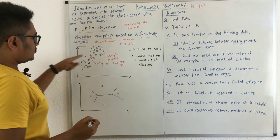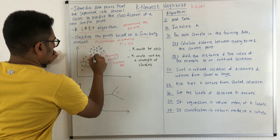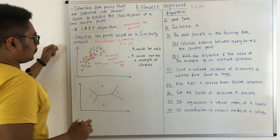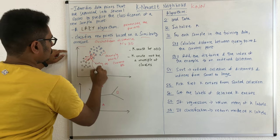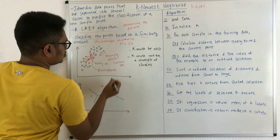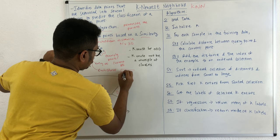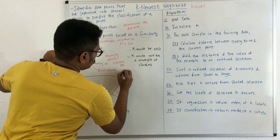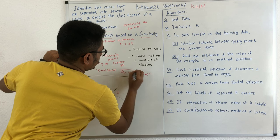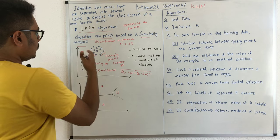What this basically does is calculate the distances of this query point from each current point — to this one, to this one, and to all these points. It uses the Euclidean distance, or you can use any distance measure like Manhattan distance or Minkowski distance. The formula is: (x1 - x2)² + (y1 - y2)², and it tries to build a distance matrix for all these particular data points.